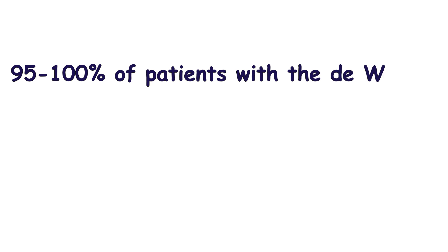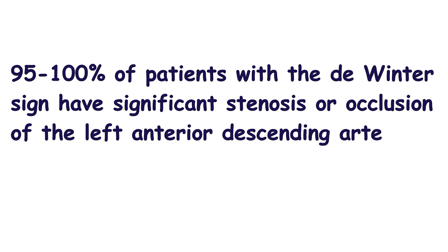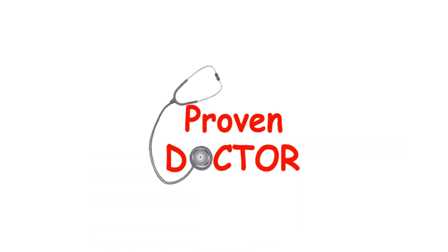The positive predictive value of the DeWinter sign ranges from 95 to 100%. In other words, almost all patients with this sign have significant stenosis or occlusion of the left anterior descending artery. Often the DeWinter sign is transitory — on preceding or following electrocardiograms, signs of ST-segment elevation indicating STEMI may be found.